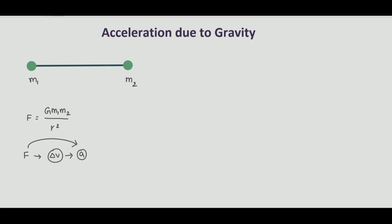In this case, in the above diagram, these two masses are free — they are not fixed. Then both will start moving towards each other because of the gravitational force of attraction.